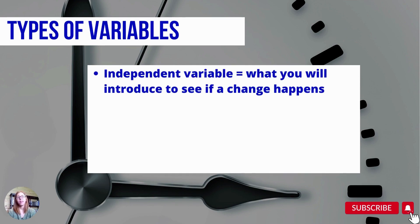These are commonly discussed but often confused, so we'll start with the independent variable. This is the part that you are controlling as a researcher. It's what you introduce to see if a change will happen.